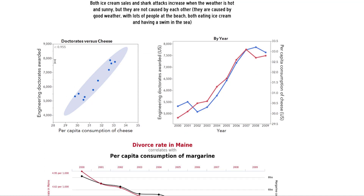These two graphs show the correlation between engineering doctorates awarded and per capita consumption of cheese. The scatter plot shows a correlation coefficient of 0.955 — a very strong correlation — and the time-series data shows a strikingly similar pattern between the two curves. We're not suggesting that eating more cheese leads to more engineering doctorates, or vice versa. These two variables are pretty unrelated; it's probably a common response to wealth — wealthier countries award more doctorates and can afford luxuries like cheese.